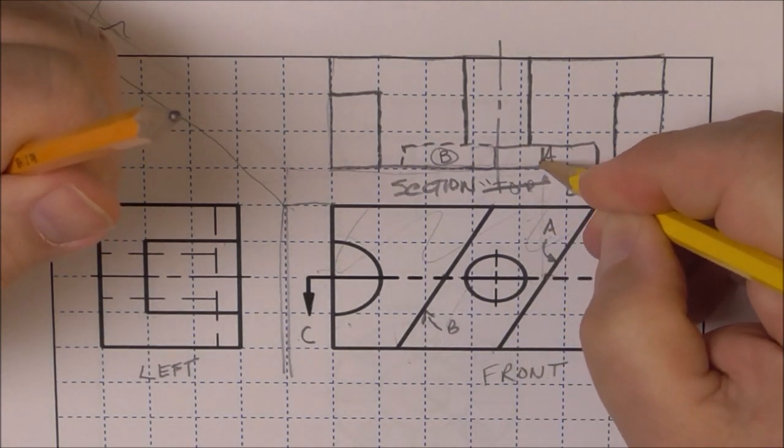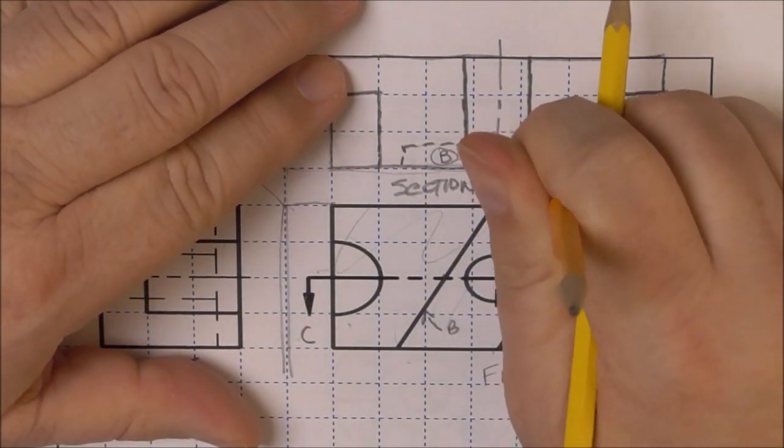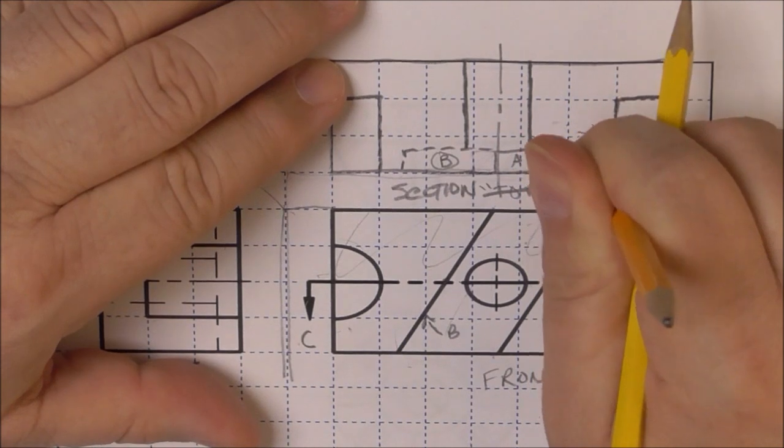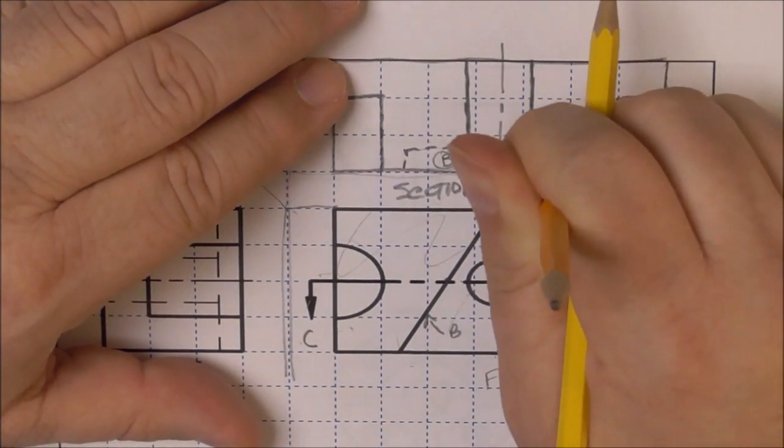So we project it out. That's now A. This part of A disappears. So some object lines in a section view may disappear.